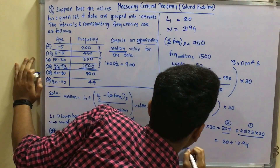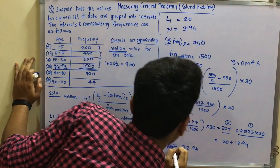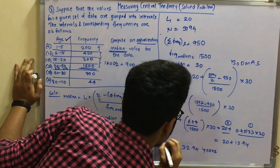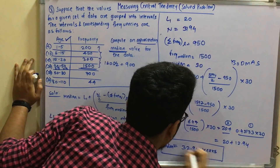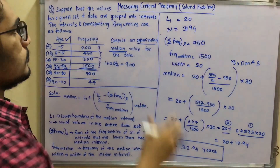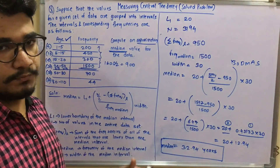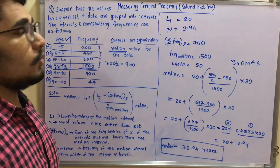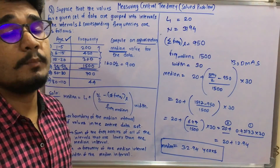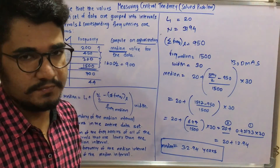So the final answer is 20 plus 12.94 equals 32.94 years — that is the median value for this data set. This was a problem on the measure of central tendency for median calculation. Hope you enjoyed this video. If you found it educational, please like, share, comment, and don't forget to subscribe. Thank you very much for watching.